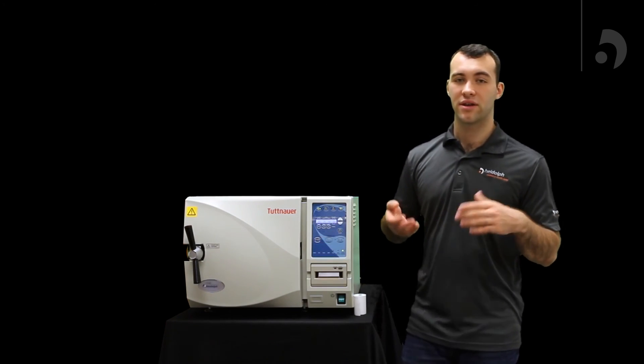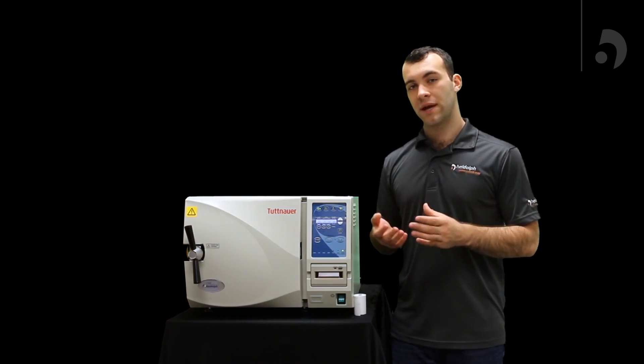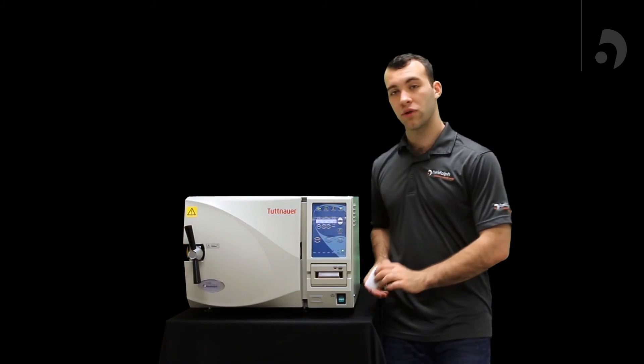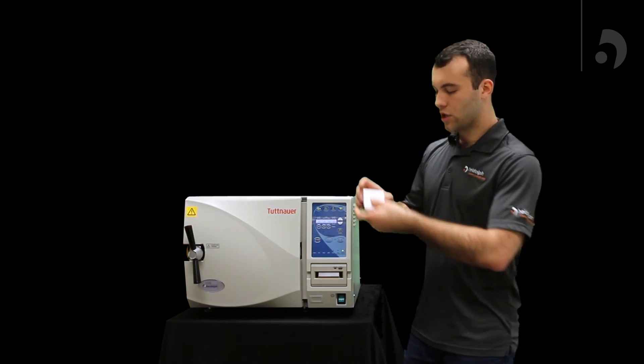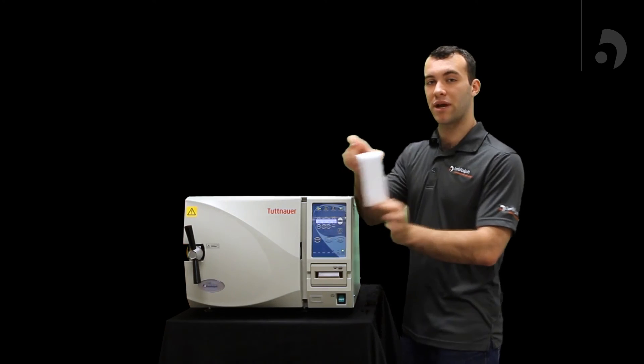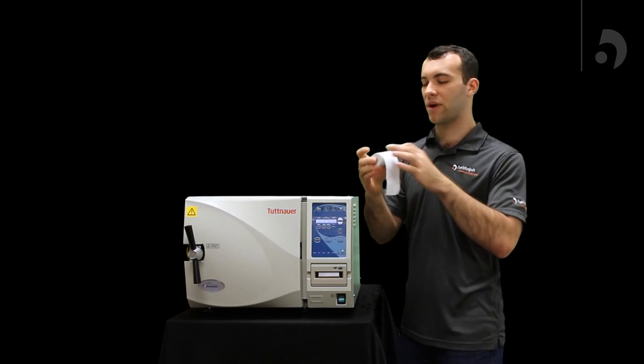Another common inquiry we get is regarding the printer. Sometimes it's spitting out printer paper, but not actually printing. This is due to the nature of thermal paper only printing on one side. The side you're going to be printing on is the top. So you want to make sure you insert your printer paper over the top like so. That should fix your problem right there.